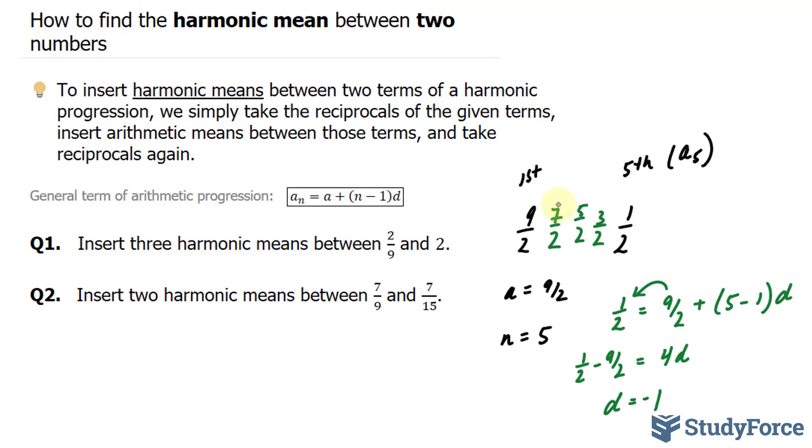These three numbers that we found need to be reciprocated. So, 7 over 2 becomes 2 over 7. 5 over 2 becomes 2 over 5. And 3 over 2 becomes 2 over 3. These will serve as our solutions.